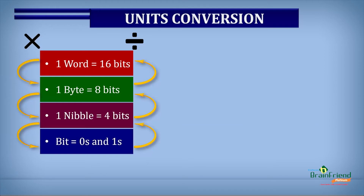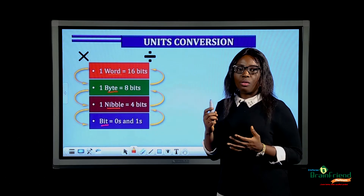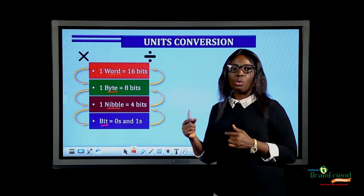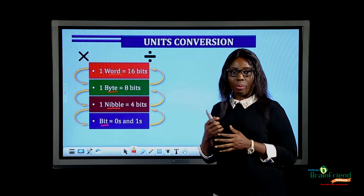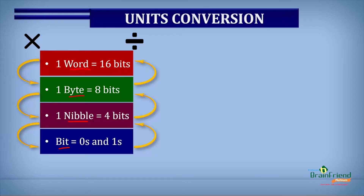Remember the four units of storage: the bit, nibble, byte, and word. The bit is the smallest, followed by nibble, byte, and then word. If you're converting from a small unit to a large unit, you divide. But if you're converting from a large unit to a smaller unit, you multiply.